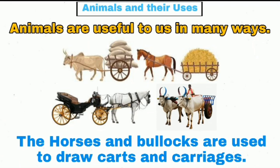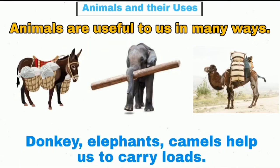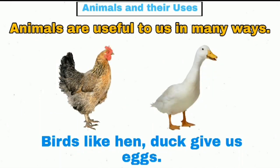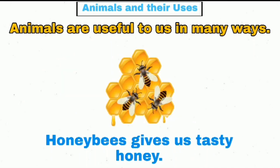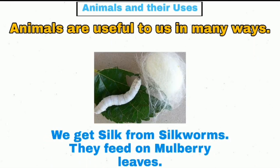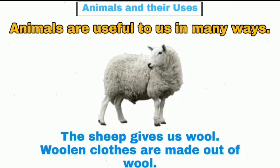Horses and bullocks are used to draw carts and carriages. Donkeys, elephants, and camels help us to carry loads. Birds like hen and duck give us eggs. Honey bees give us tasty honey. We get silk from silkworms, which feed on mulberry leaves.